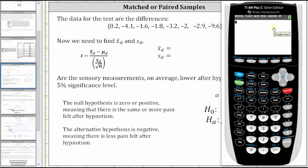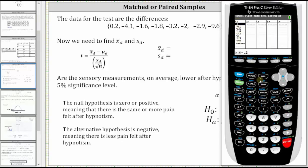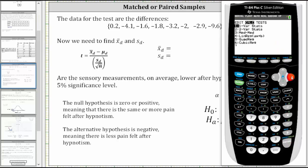So going to the calculator to enter data, press stat, enter. I already have the differences here in L1. Next we press stat, right arrow once to calculate, and then option one for one-var stats. And therefore we press enter.